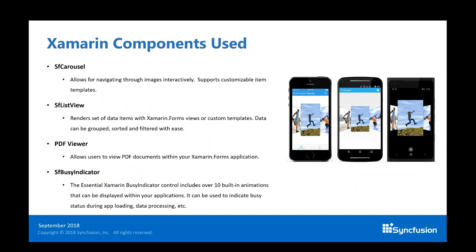First, we'll start with the Syncfusion carousel, which allows for easy interactive navigation of images — you can swipe through different images in a set. Next, we'll look at the list view, which renders a set of data items inside a Xamarin Forms view or using a custom template, with support for grouping, sorting, and filtering. Then we'll look at the PDF viewer and PDF generator, which supports annotations including strikethrough, highlighting, and underlining. Lastly, we'll look at the Syncfusion busy indicator, a collection of over ten pre-built animations for indicating that your application is busy loading.